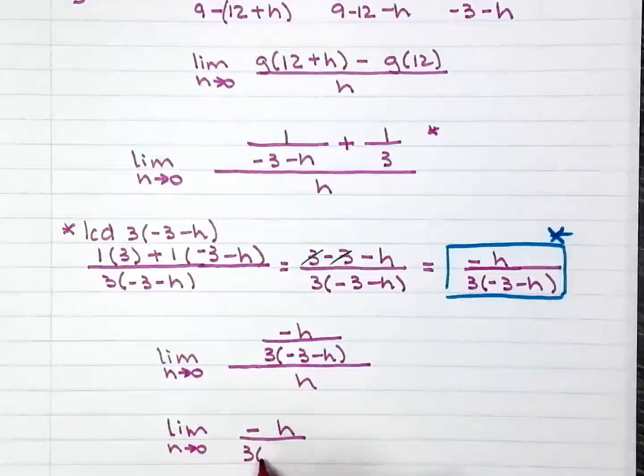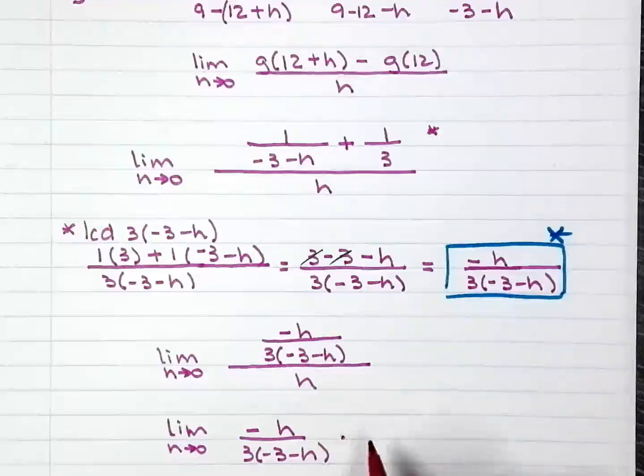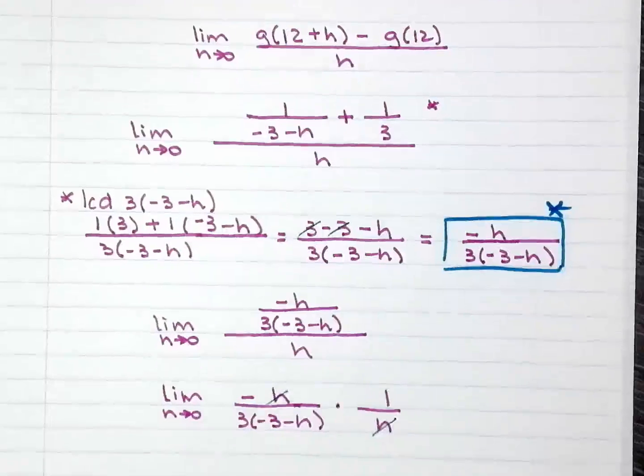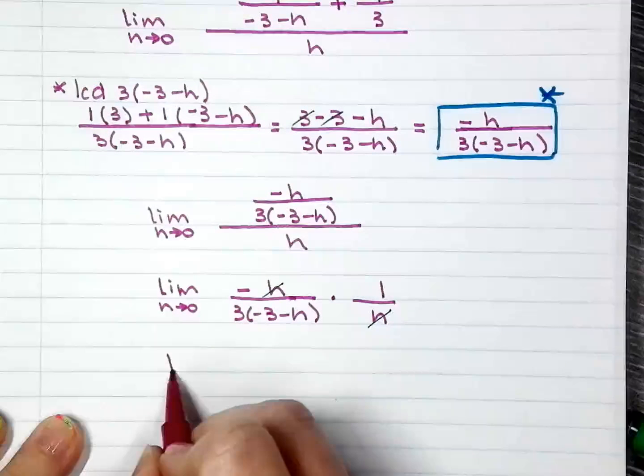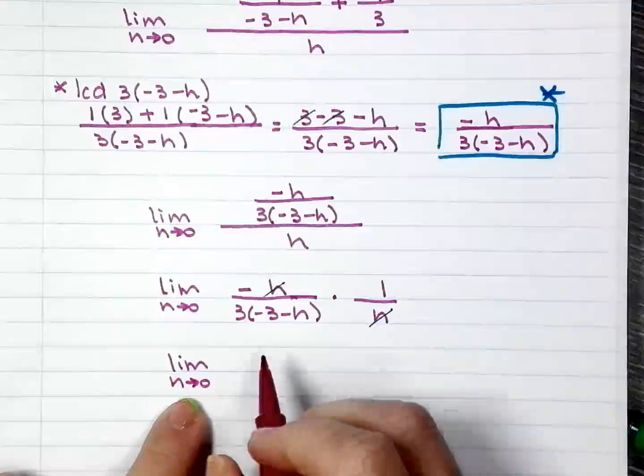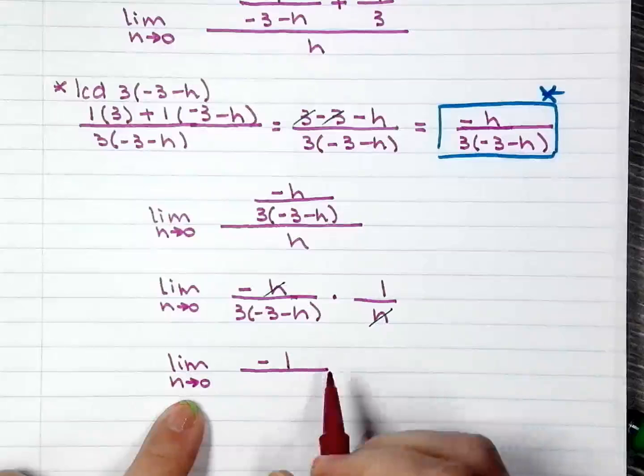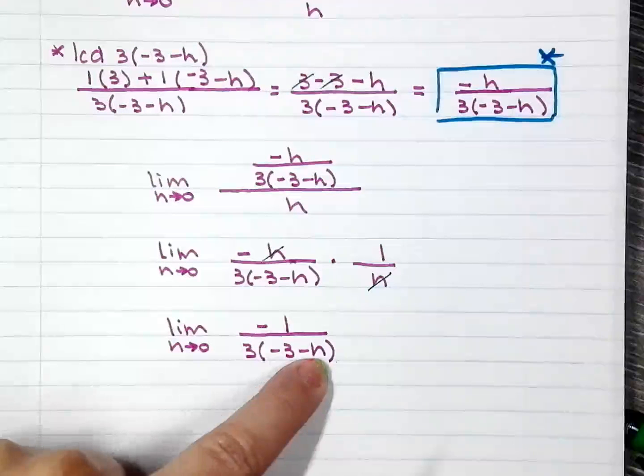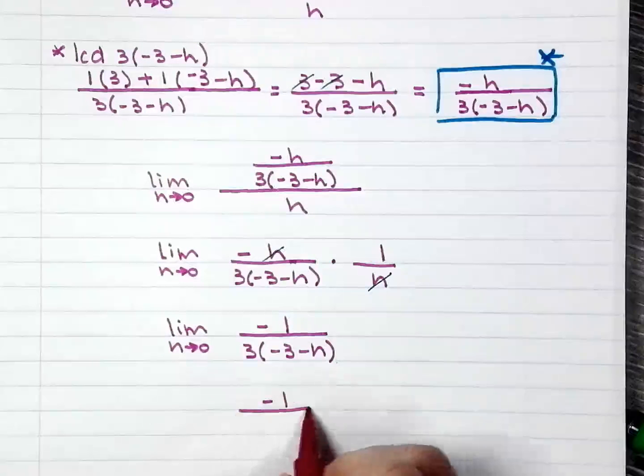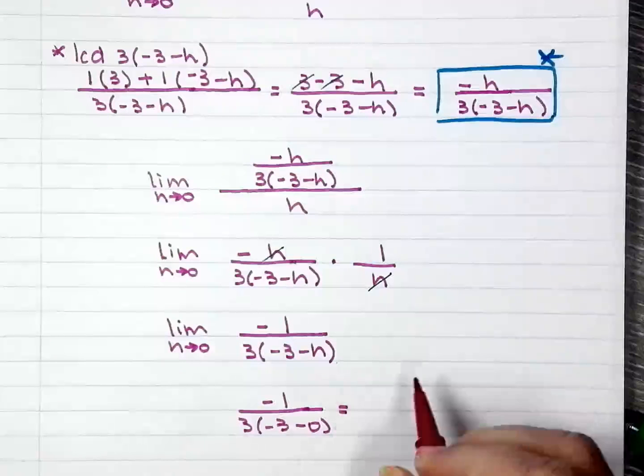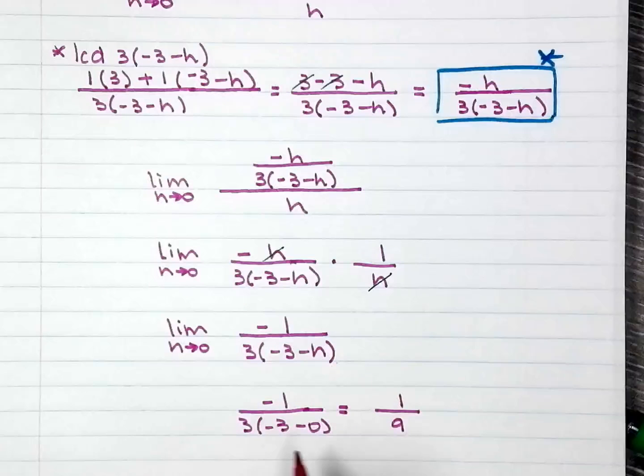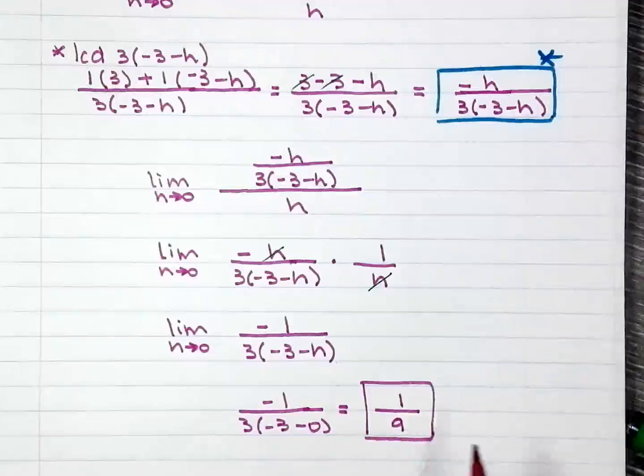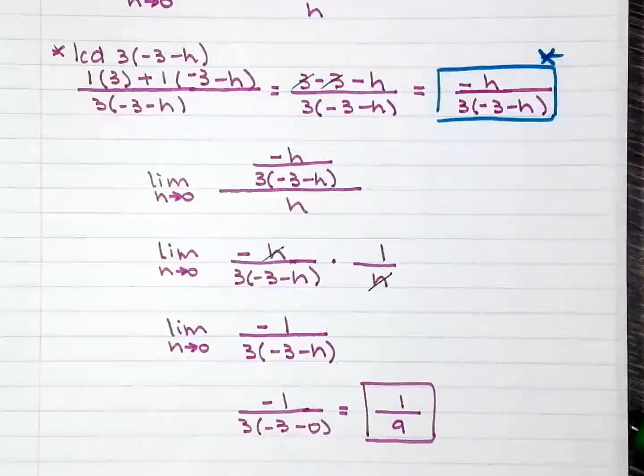So -h over 3(-3-h). Multiply by the reciprocal. So 1 over h. h divided by h is 1. We are almost to the point that we can just go ahead and plug in 0 for h. -3-h. Now, we will go ahead and substitute 0 right there for h. And then here you get a pretty 1/9. Because here I have -1 and I have -9. Two negatives make a positive. Voila. All done. Now you know how to find derivatives using limits.